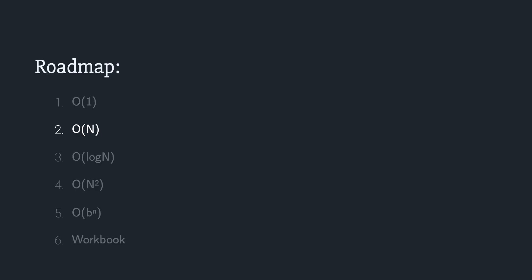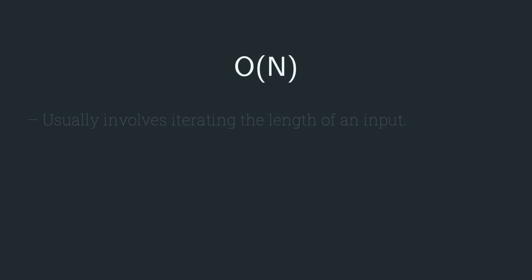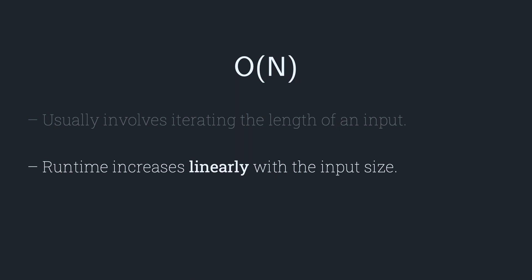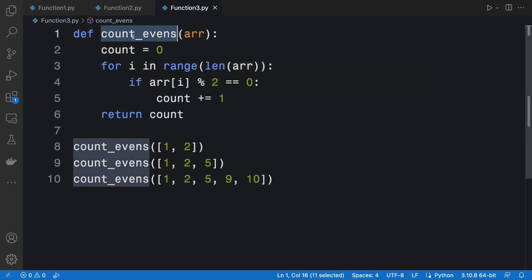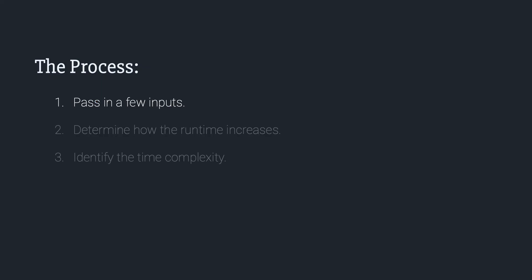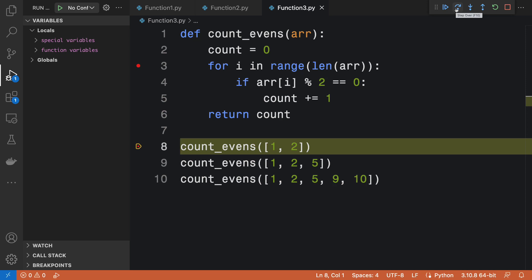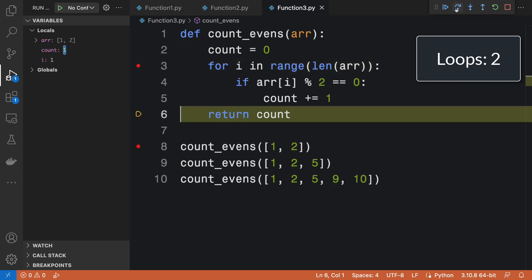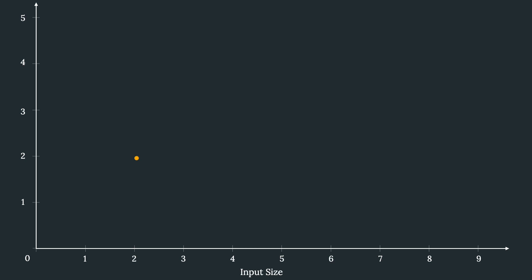Now we can look at O(n). A time complexity of O(n) usually involves iterating the length of an input, so the running time will increase linearly with the input size. This function counts the amount of even numbers in an array. Passing in an array with two elements, the loop will run twice before returning a final count. The number of loops is determined by the number of elements in the array — two elements means the loop runs twice.